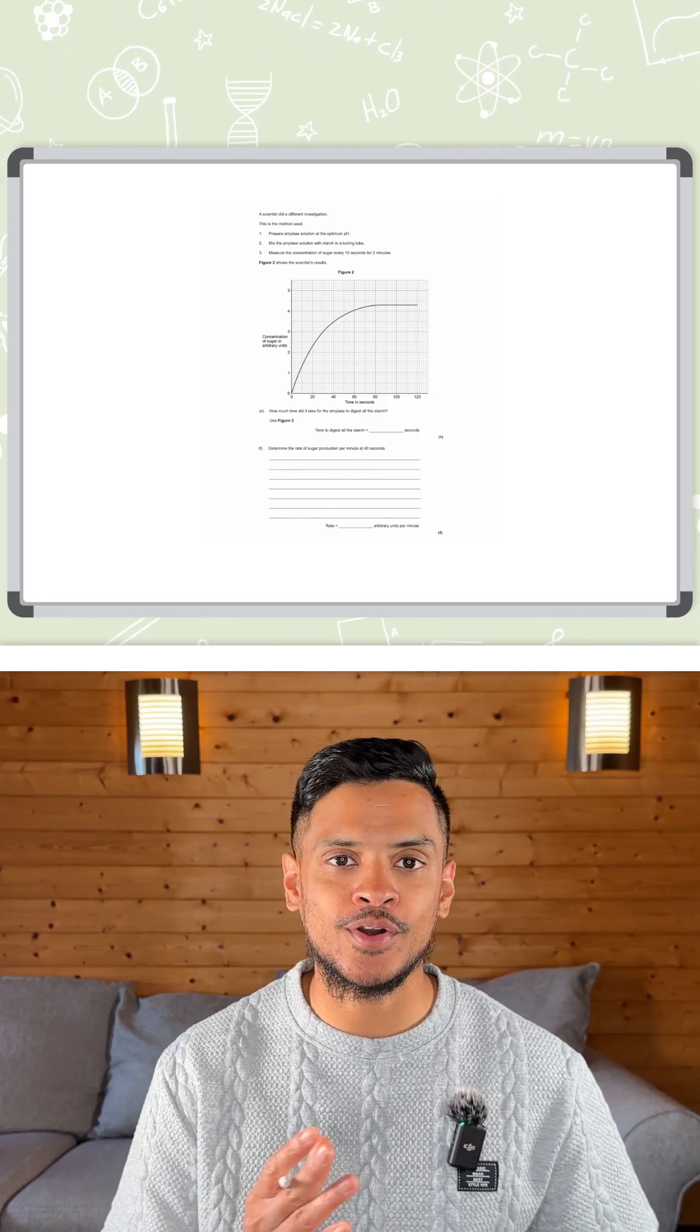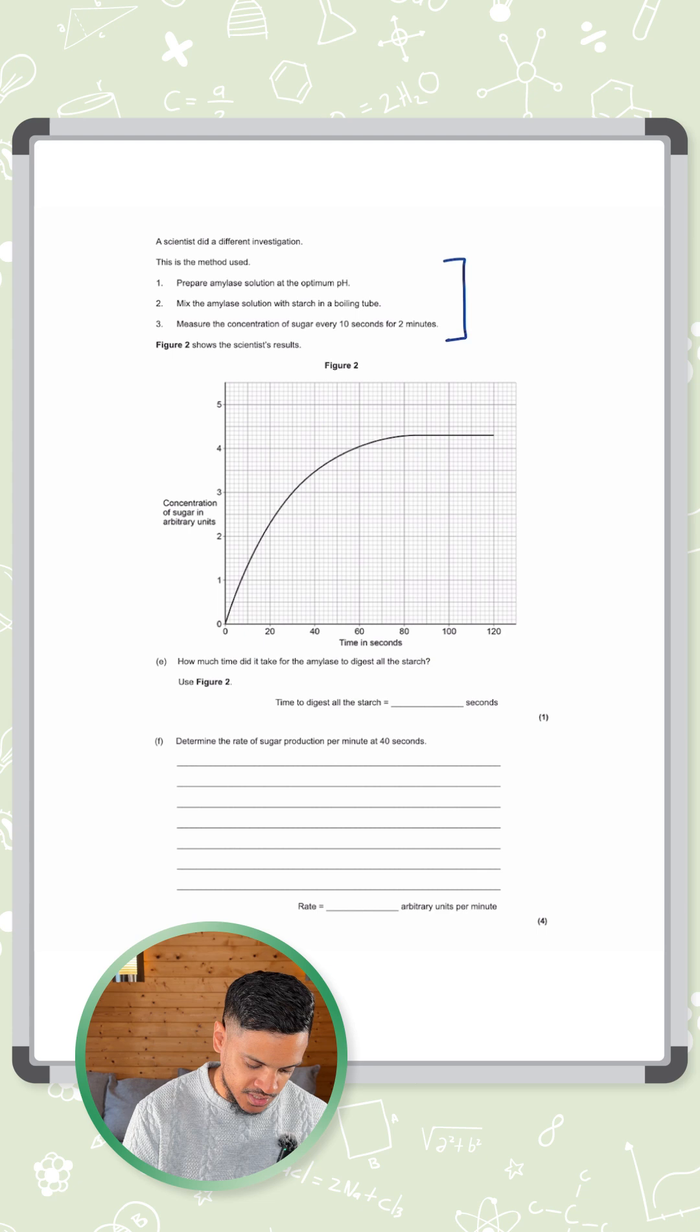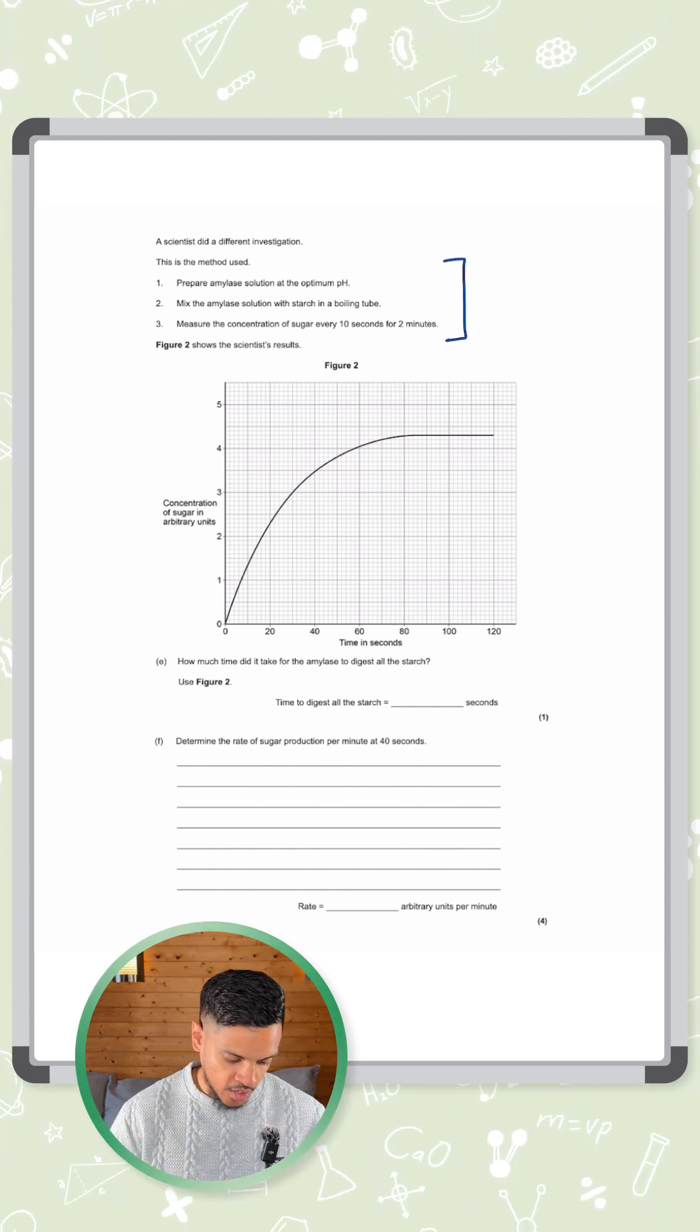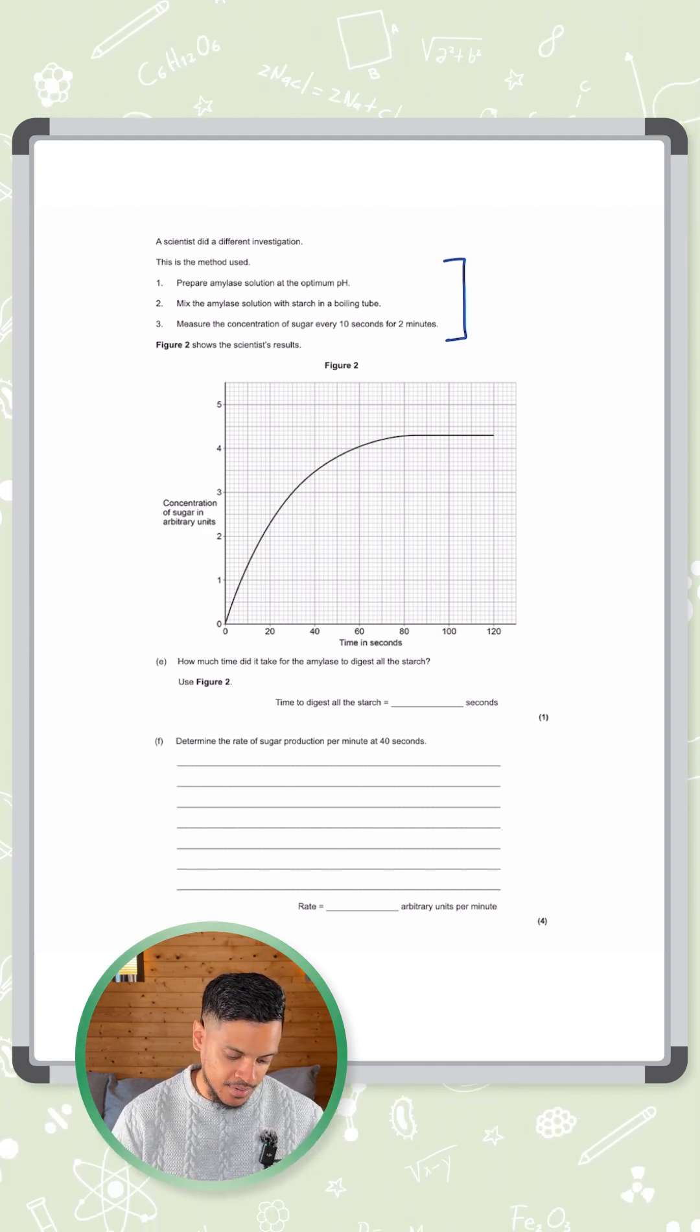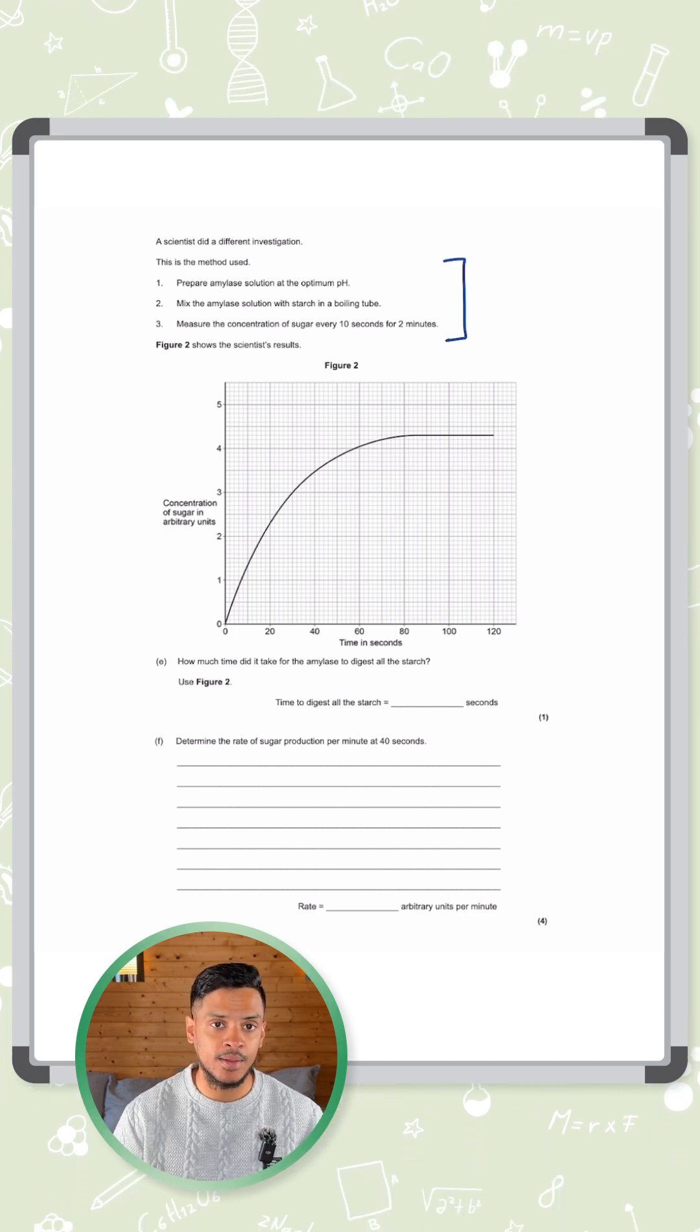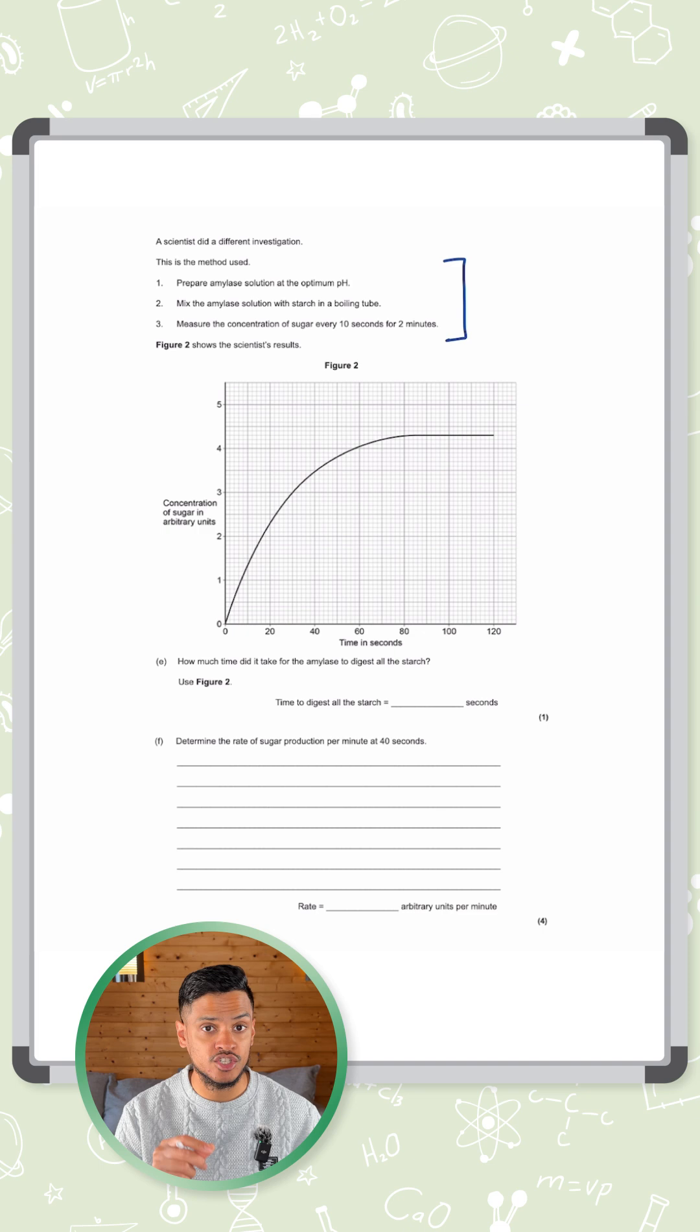Alright, we have five marks here on the required practical for enzymes. We've got a method which is slightly different to the normal one we're used to in this topic. So a scientist prepared amylase solution at optimum pH and they mix the amylase with starch in a boiling tube. Think about what's going to happen here. Amylase, remember, is the enzyme that breaks down starch into sugars.